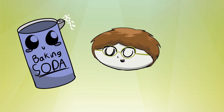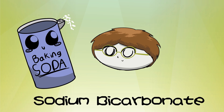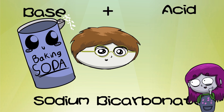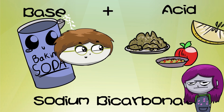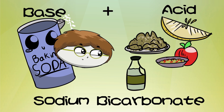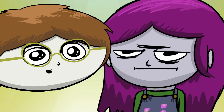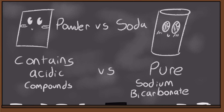Baking soda is the pure form of sodium bicarbonate, which is a base and needs an acid in the dish to react with. Some example acidic ingredients are brown sugar, applesauce, lemon, and vinegar. If the dish contains an acid, that's fine, but if the dish doesn't have something to react with, you have to go with baking powder, which contains additional acidic ingredients.